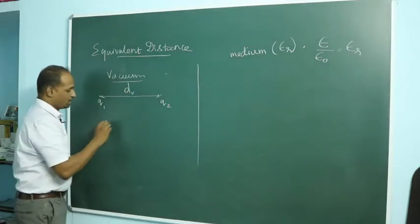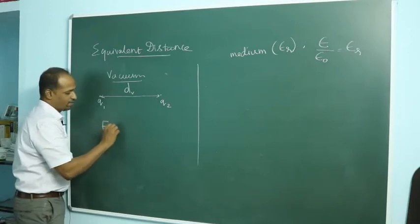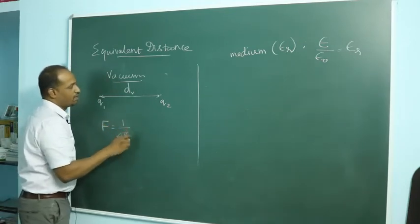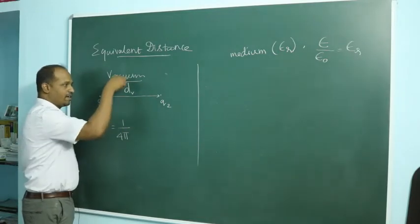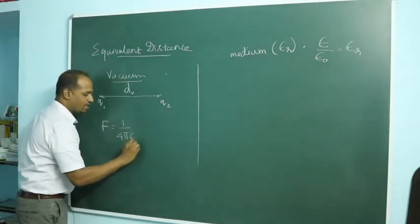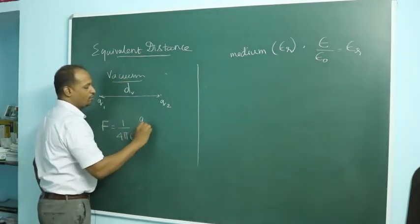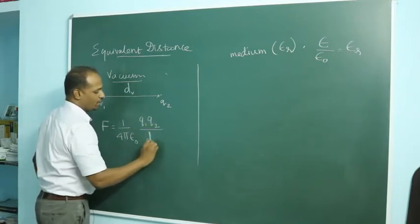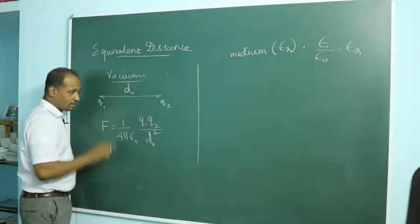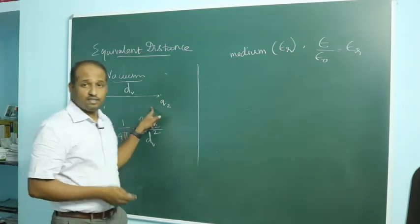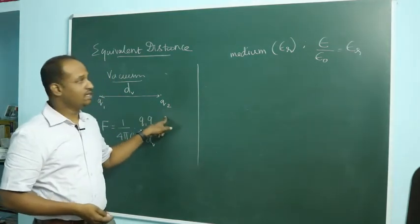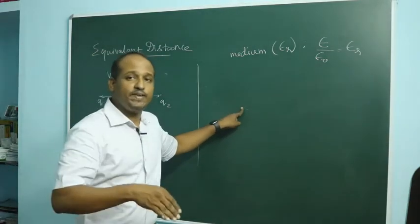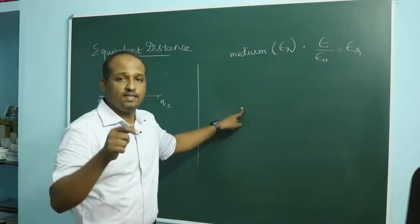These two charges are kept in vacuum, so we write F is equal to 1 over 4 pi epsilon_naught times q1 q2 divided by D_vacuum squared. Now, what distance do these two charges have to be kept apart in the medium so that they will still experience the same force?